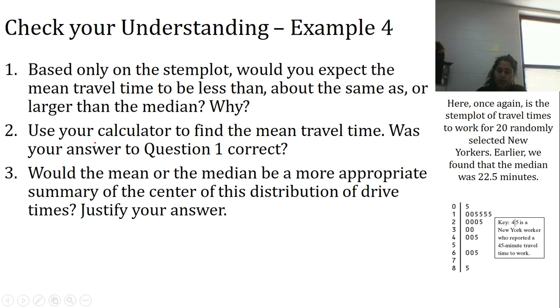So check your understanding. Based on only the stem plot, what would you expect the mean travel time to be: less than, about the same as, or larger than the median, and why? We've got that same information about the New York workers. We already found that the median was 22.5. If you're just looking at the stem plot, they're asking you to compare the mean, the average, to the median, that middle point. So what would you kind of guess? This is a self-check for you. I'm not going to answer this question. I'm giving you something to think about for next week's class. Use your calculator to find that actual mean. So take a second, solve the average, and then justify your answer with the appropriate data.